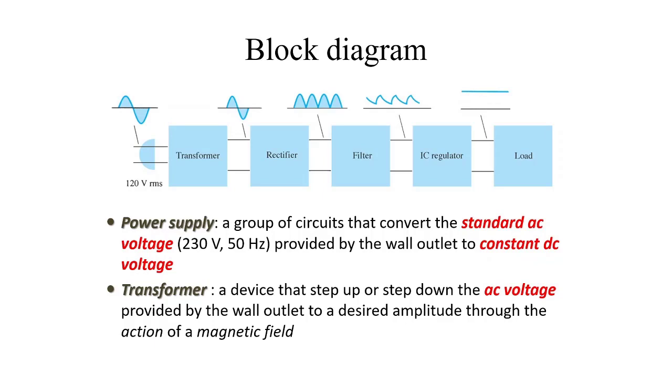A block diagram of regulated power supply consists of a transformer, rectifier, filter, IC regulator and a load connected externally. The regulated power supply has many uses where we can operate our appliances on very low DC voltage, which is derived from the AC mains available, 230 volt, 50 hertz AC.